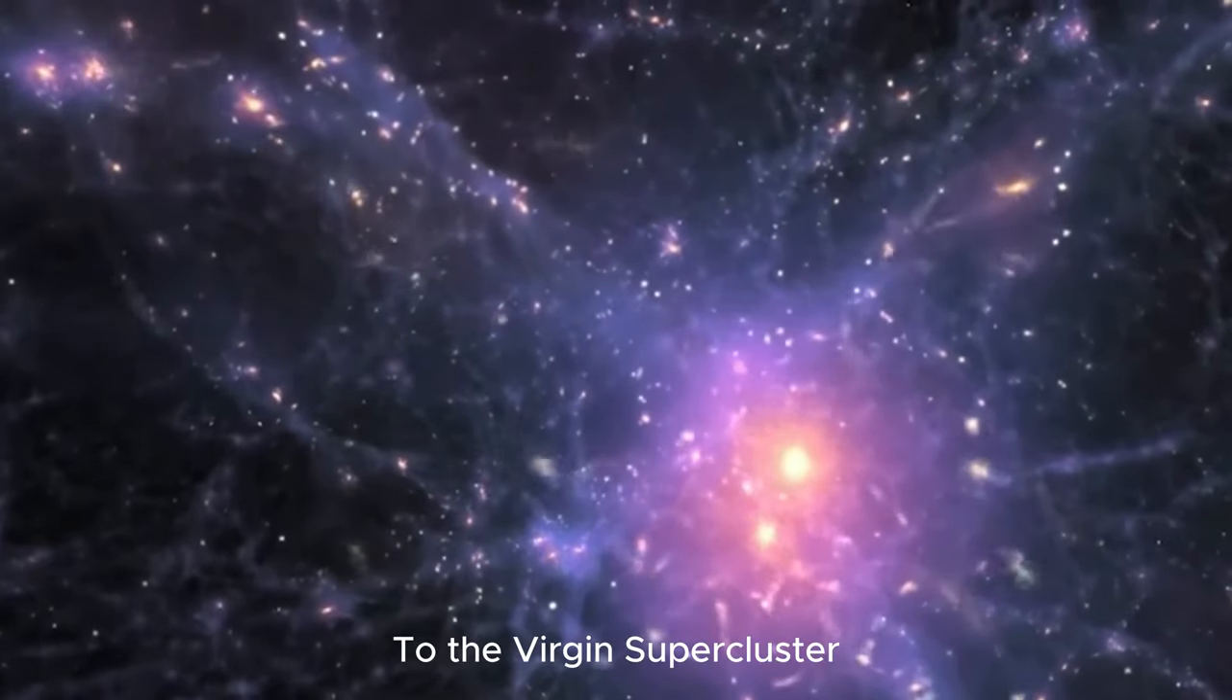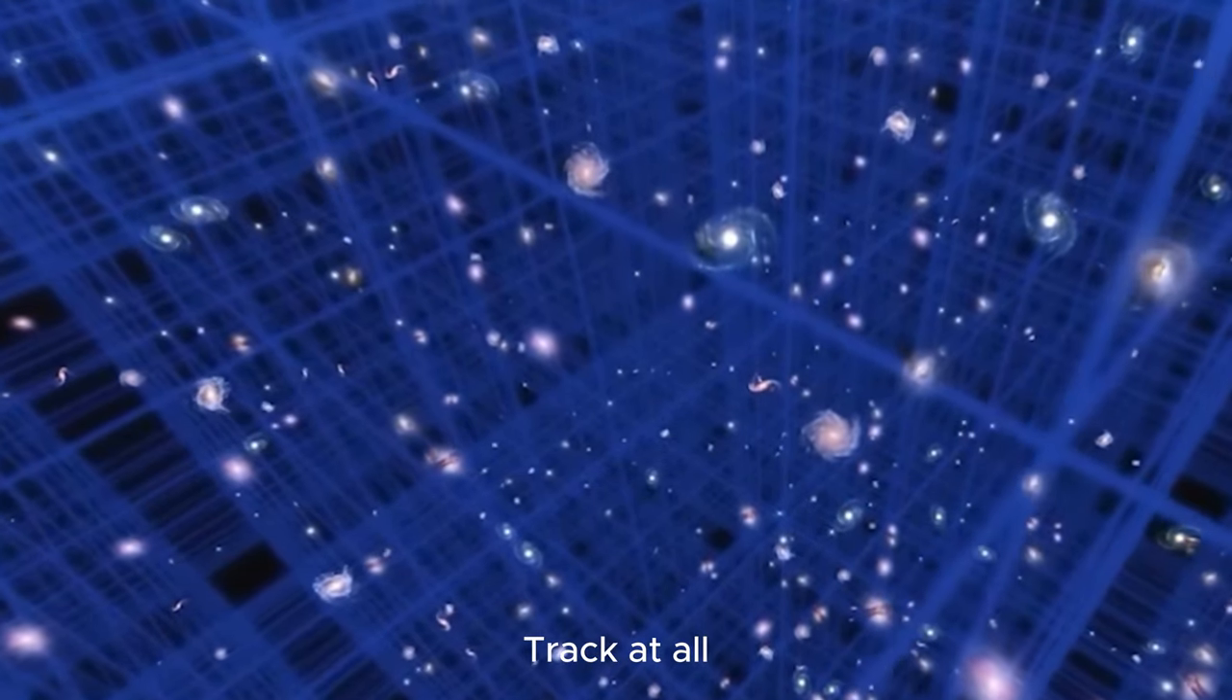So from Earth to the solar system to the galaxy, to the local group of galaxies, to the Virgo supercluster, the higher you go, the more disorganized you are. So the real motion of the Earth in the universe may be just an irregular track.